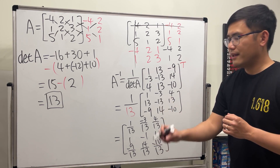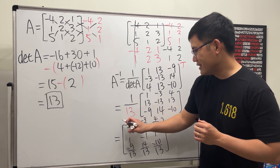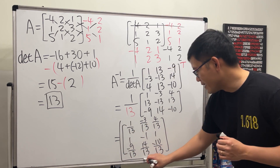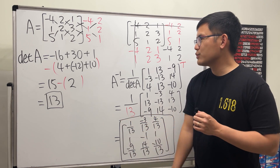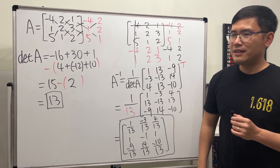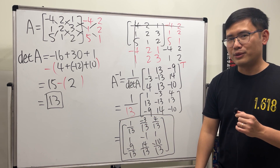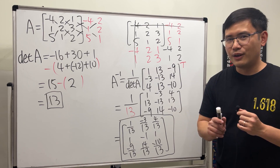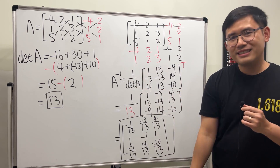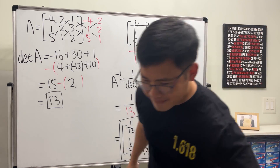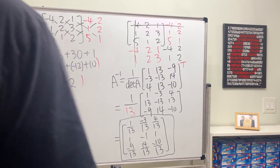And there you have it — this is perhaps the easiest way to find the inverse of a 3x3 matrix. Hopefully this helps!